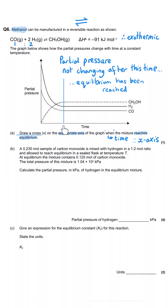We're looking at a point on the x-axis where it needs to be marked on or just below the line, at the point where the partial pressures are no longer changing.